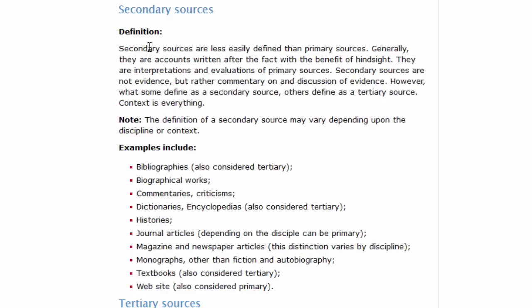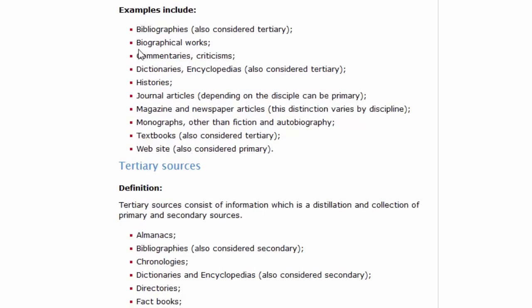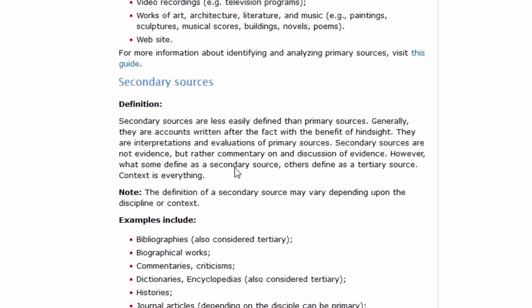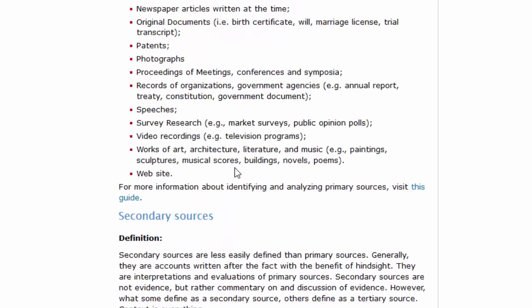Secondary sources. Definition: Secondary sources are less easily defined than primary sources. Generally they are accounts written after the fact with the benefit of hindsight. They are interpretations and evaluations of primary sources. Secondary sources are not evidence, but rather commentary on and discussion of evidence. However, what some define as a secondary source, others define as a tertiary source. Context is everything. And they give examples such as bibliographies, biographical works, commentaries, criticisms, histories, textbooks, all these kinds of things and so on. Now this is just a rough list. Some people will disagree about what constitutes primary and what constitutes secondary, etc.